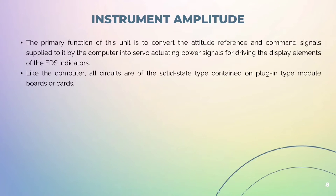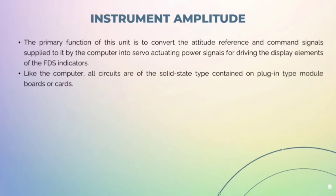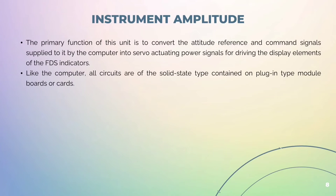Instrument Amplifier: The primary function of this unit is to convert the attitude reference and command signals supplied to it by the computer into servo-actuating power signals for driving the display elements of the FDS indicators. Like the computer, all circuits are of the solid-state type contained on plug-in type module boards or cards.